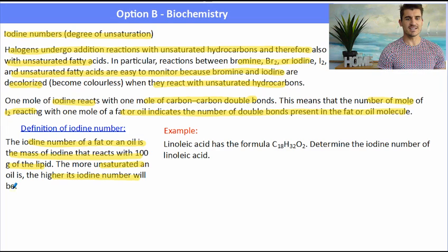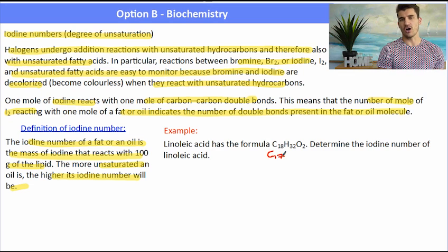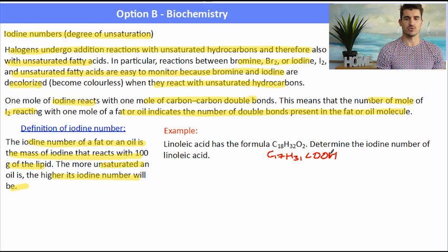So the iodine number of a fat or an oil is the mass of iodine that reacts with 100 grams of the lipid. The more unsaturated the oil, the higher its iodine number. So for example, linoleic acid has the formula C18H32O2. Determine the iodine number of linoleic acid.